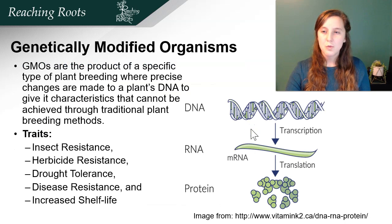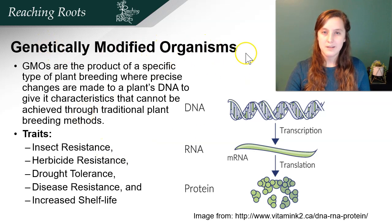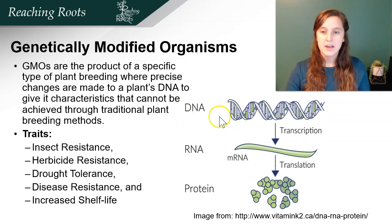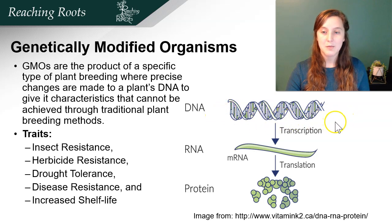Norman Borlaug was a plant breeder. Now we're going to learn about genetically modified organisms. This is a specific type of plant breeding that specifically edits portions of the DNA. DNA is our genetic makeup of humans, plants, animals, etc.